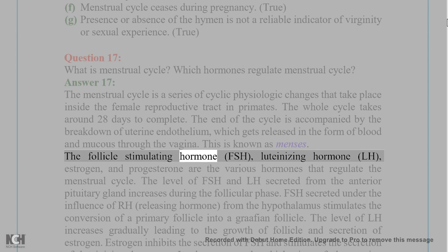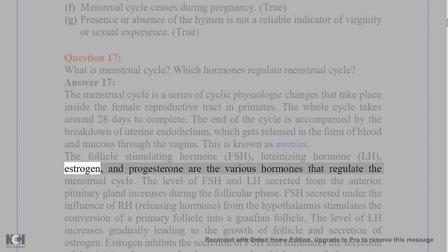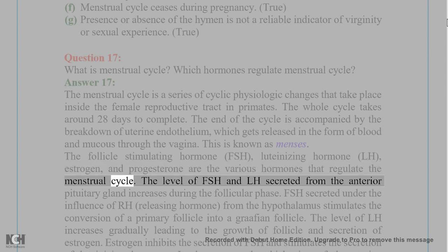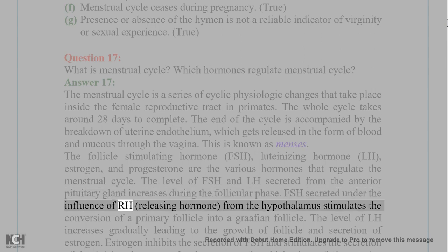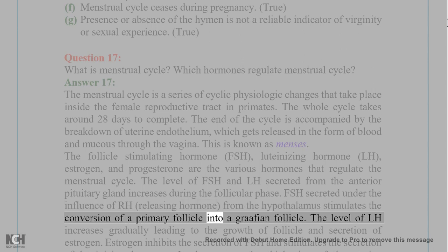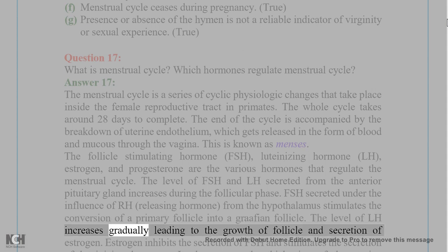Follicle-stimulating hormone (FSH), luteinizing hormone (LH), estrogen, and progesterone are the various hormones that regulate the menstrual cycle. The level of FSH and LH secreted from the anterior pituitary gland increases during the follicular phase. FSH, secreted under the influence of releasing hormone (RH) from the hypothalamus, stimulates the conversion of a primary follicle into a Graafian follicle.